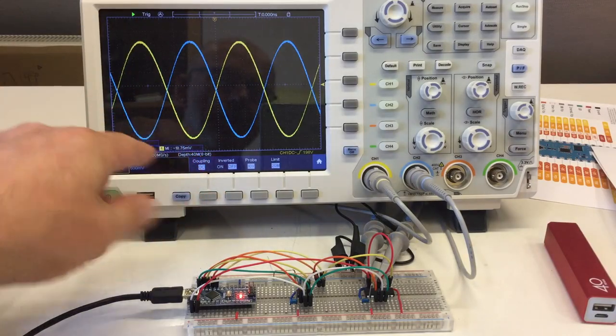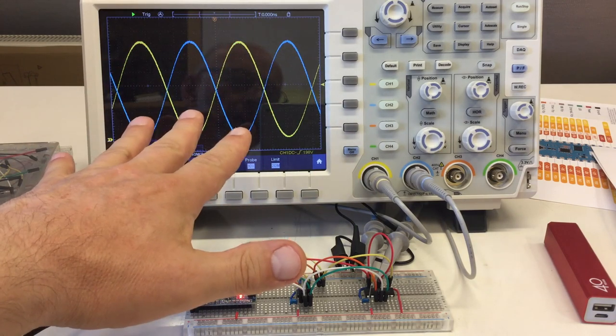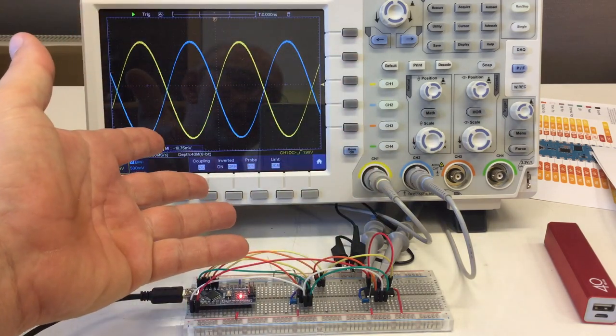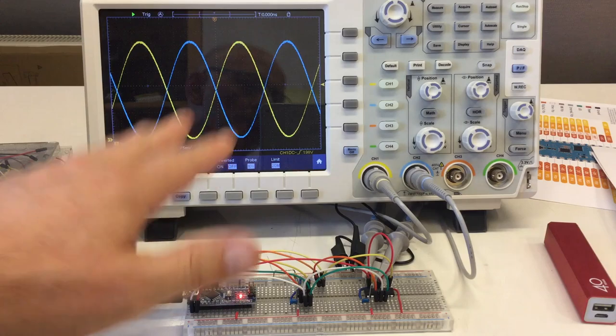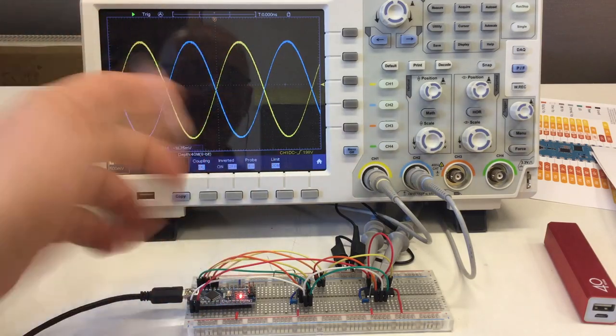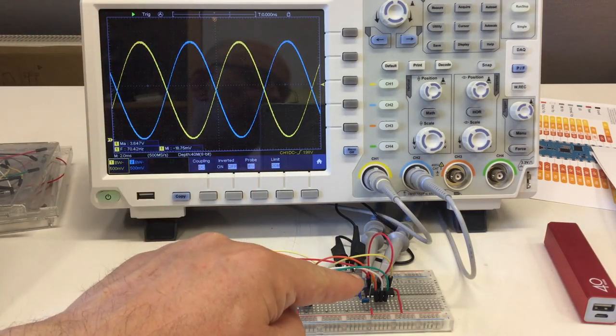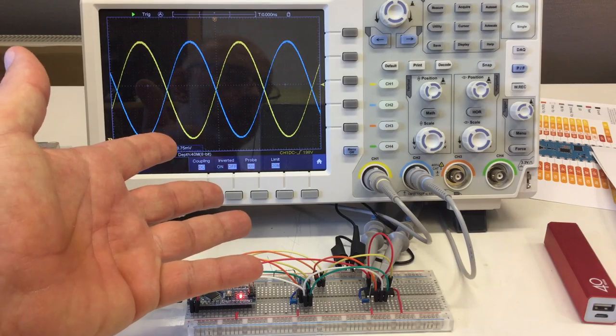No surprises here. We have two sine waves again. I didn't change the code really. I'm just using now another library that can drive that 4922. We'll have a look at the code in a second.